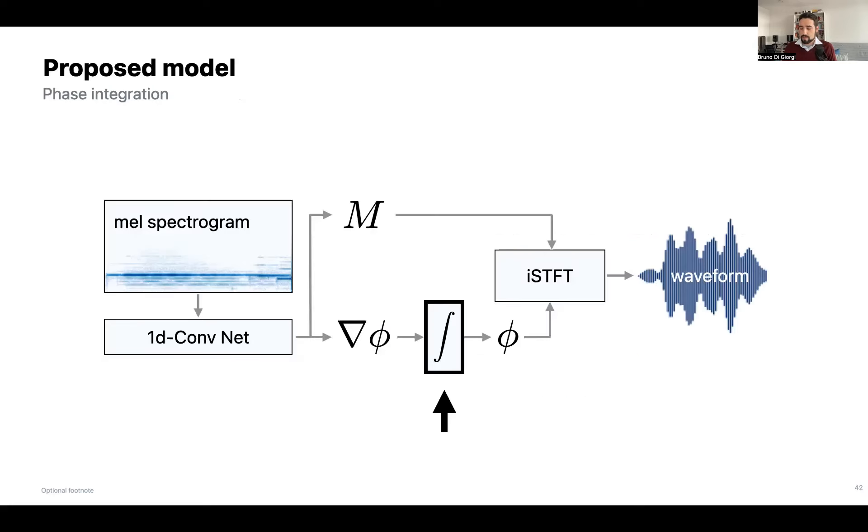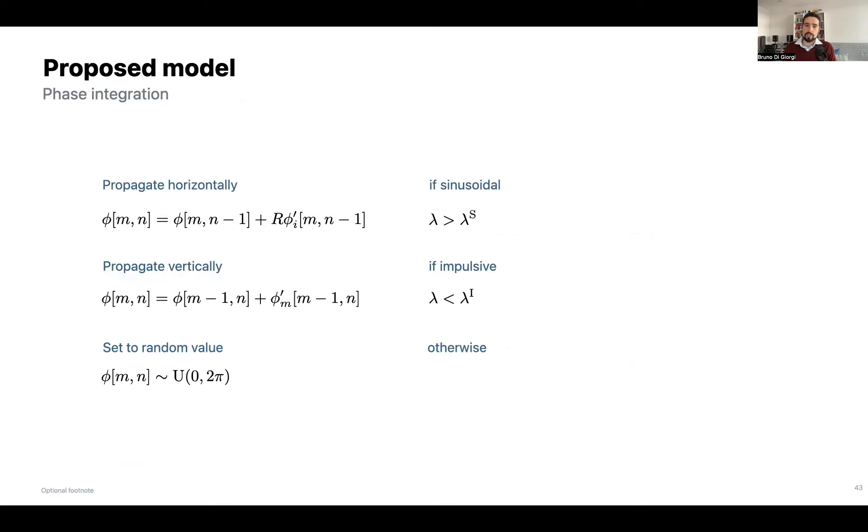So the phase integration stage that allows us to estimate the phase from phase gradient is a non-learned stage, a purely signal processing stage. And what it does is it propagates phase horizontally for sinusoidal bins, meaning if lambda is greater than that constant lambda_s, which is a configuration constant, and we propagate the phase vertically for impulsive bins. In between these two constants lambda_s and lambda_i, if it's neither, we just randomize the phase, which is shown to obtain a more natural sound rather than treating each bin as either sinusoidal or impulsive.